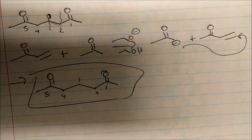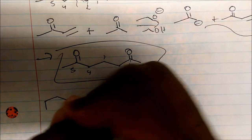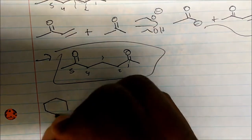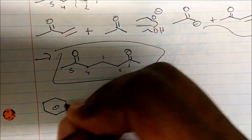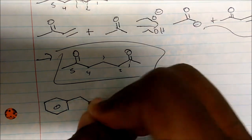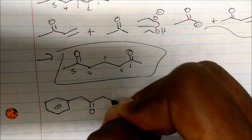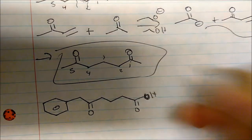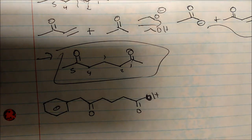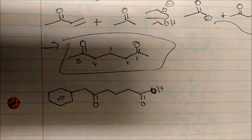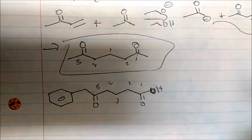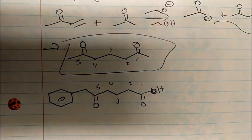Now, what if we wanted to make this new compound? Pause the video and think about it. Well again, it doesn't matter that I see an acetic acid group — what I see is 1, 2, 3, 4, 5: the carbonyls are in a 1,5 position, so I know this is coming from Michael addition.